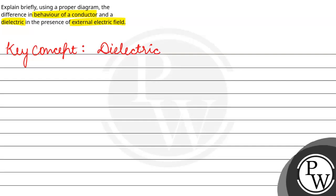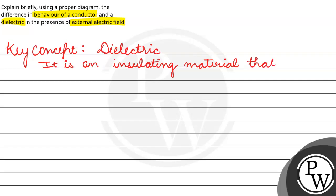So dielectric kya hotta hai? Dielectric hotta hai insulating material, jo ki electric field ko produce kar sakta hai without conduction. So dielectric is an insulating material that can produce electric effect without conducting.